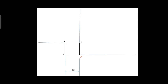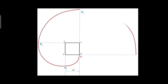With 1 as center and 1P as radius, draw an arc from point P up to the extension line of 1 — you will get P1. Then 2 as center, 2P1 as radius, draw an arc from P1 up to the extension line of 2 — you will get P2. Next, 3 as center and 3P2 as radius, draw an arc from P2 up to the extension line of 3 — that point is P3. Finally, 4 as center and 4P3 as radius, draw an arc from P3 up to the extension line of 4 — you will get P4. This is the involute curve on the square.